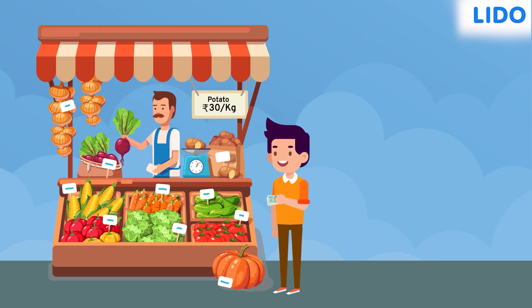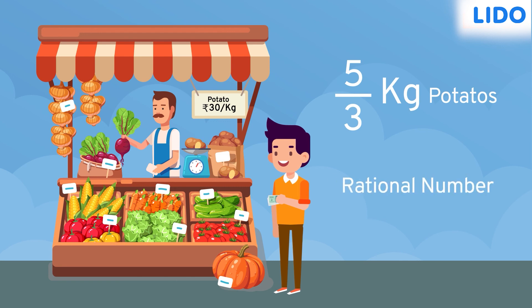So for 50 rupees, Ian can buy 5 by 3 kg of potatoes, and 5 by 3 is a rational number. Now that you understand this, let's go and play with some rational numbers.